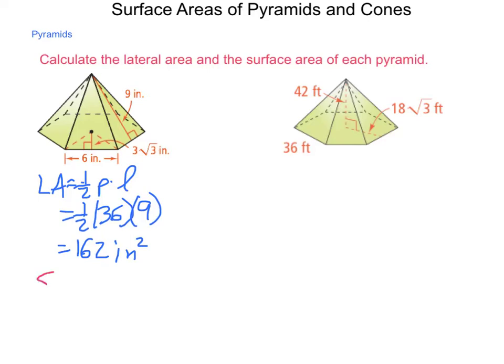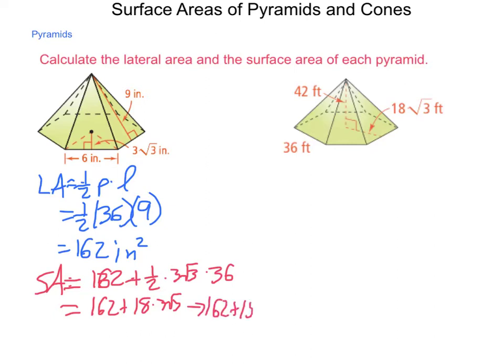Now our surface area is going to be our lateral area, 162, plus our base area. The base area of a regular hexagon is 1 half apothem perimeter. So 1 half times that 3 root 3, times the perimeter, which was 36. So 162 plus 18 times 3 root 3. 18 times 3 is 54, this gives us 162 plus 54 square root of 3 inches squared for that total surface area of the pyramid.